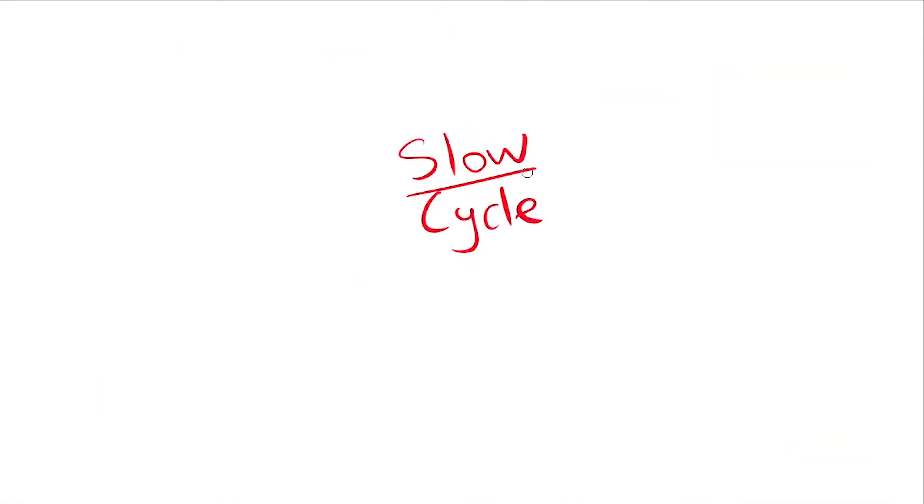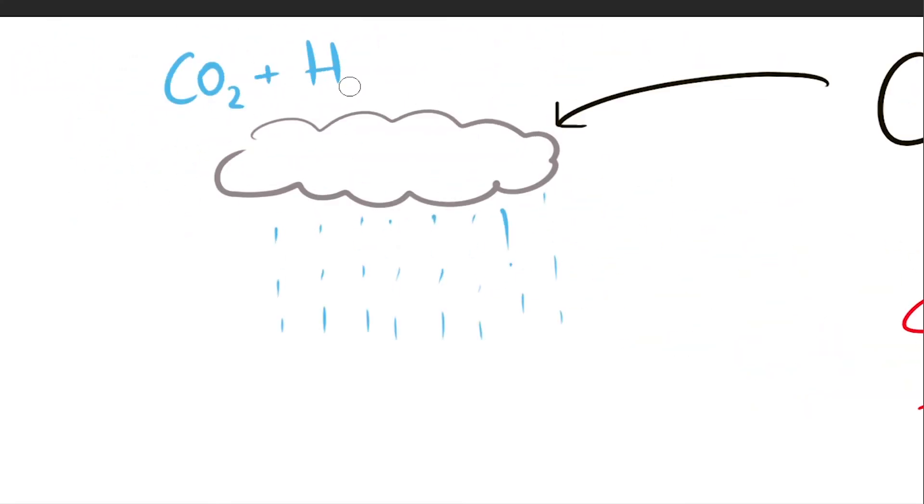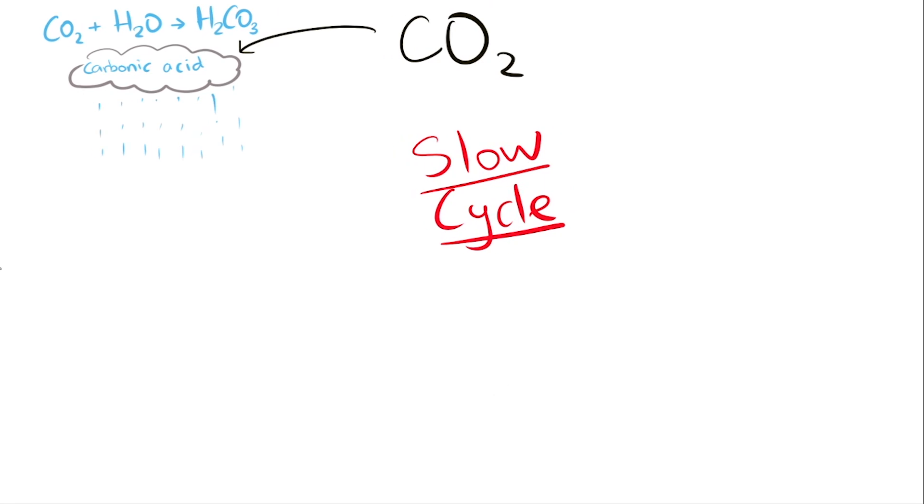There is also a slow cycle that happens simultaneously with the fast cycle. The carbon in the atmosphere combines with water to form carbonic acid and rains down onto Earth's surface. This slowly dissolves rocks over time and releases calcium ions, which are then carried into the ocean through rivers.